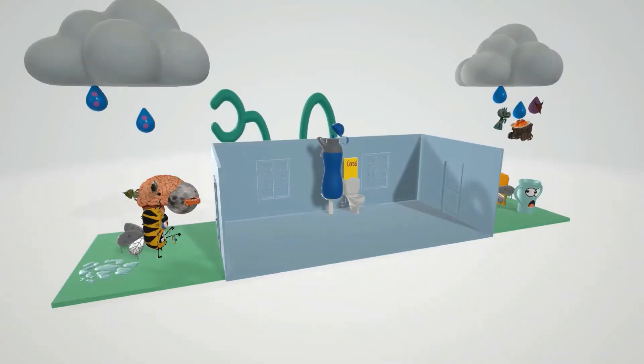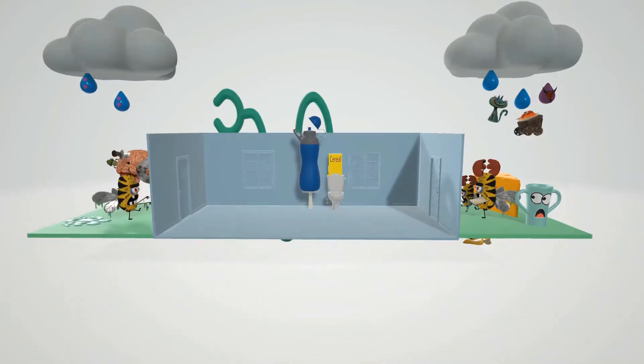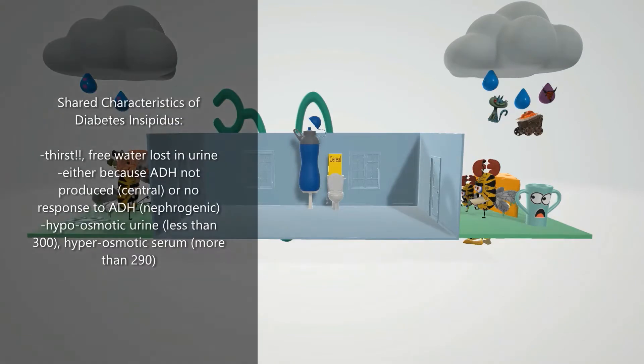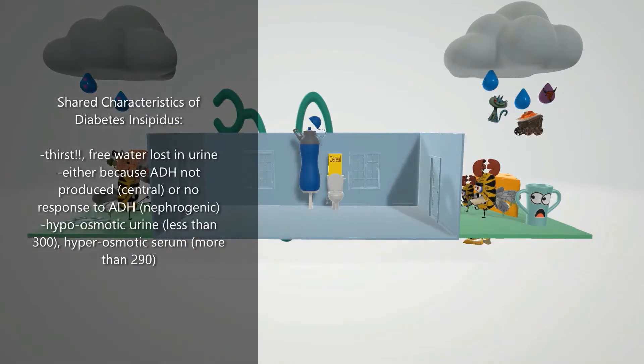In this scene we're going to talk about diabetes insipidus — we're going to compare central diabetes insipidus and nephrogenic diabetes insipidus, and then we're going to talk about treatment at the end.